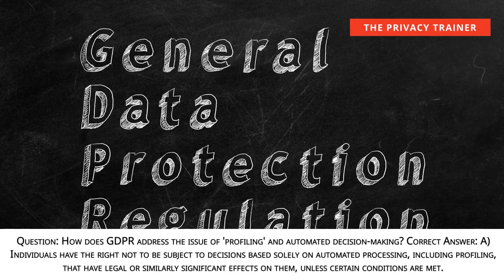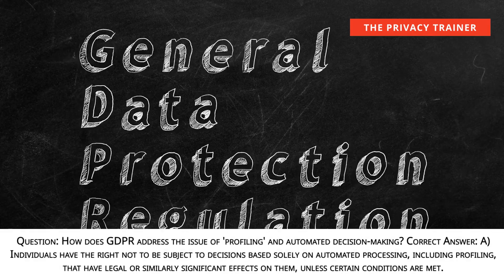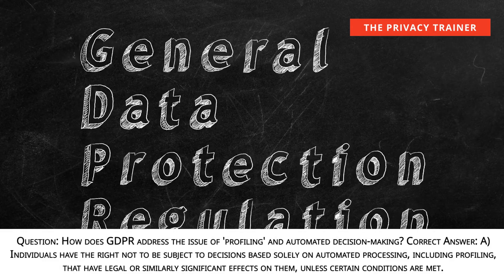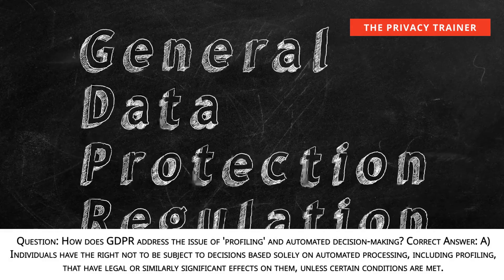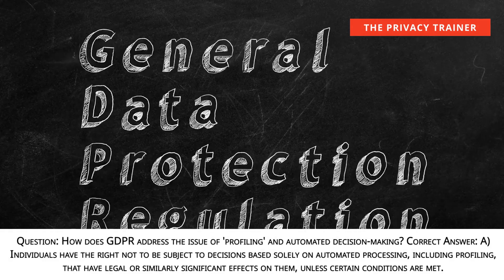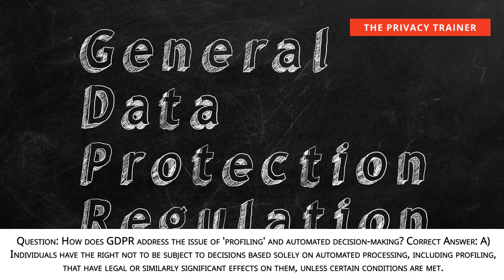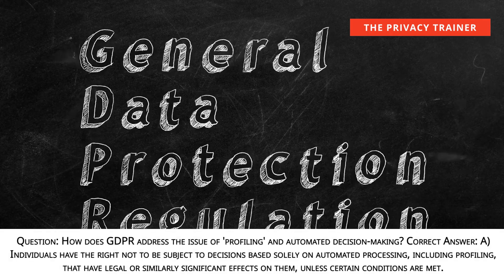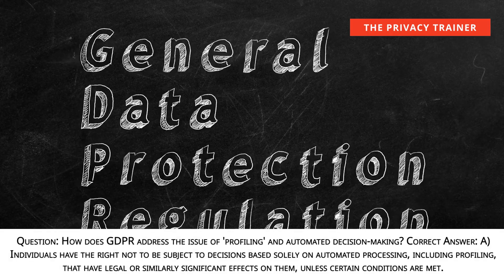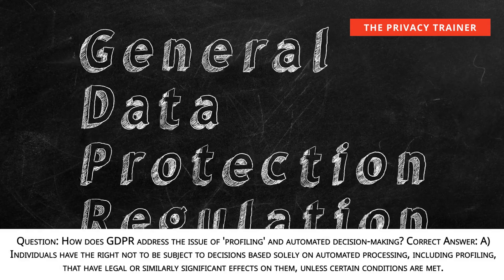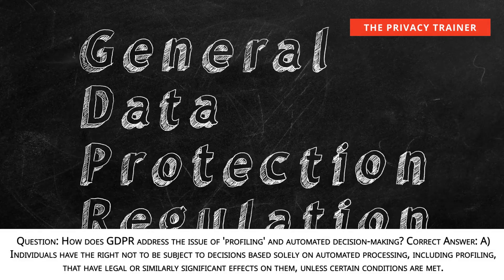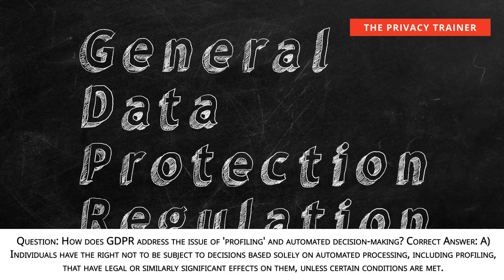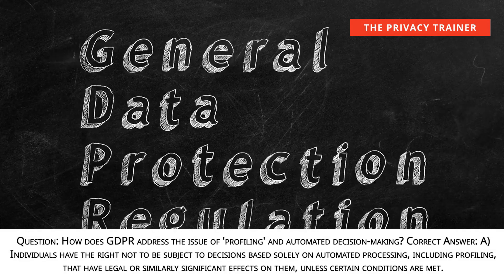Question: How does GDPR address the issue of profiling and automated decision-making? Answer A: Individuals have the right not to be subject to decisions based solely on automated processing, including profiling, that have legal or similarly significant effects on them, unless certain conditions are met.